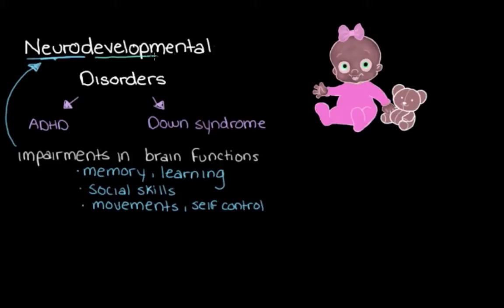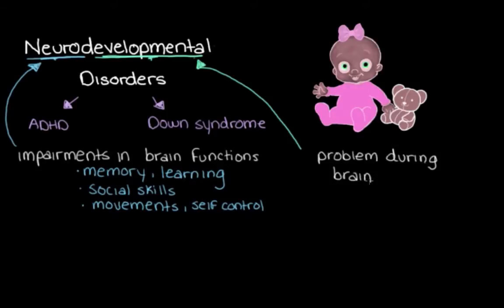And we say "developmental" here because these disorders arise when something goes wrong in the brain while it's developing. This usually happens pretty early on, often during pregnancy or sometimes shortly after birth.